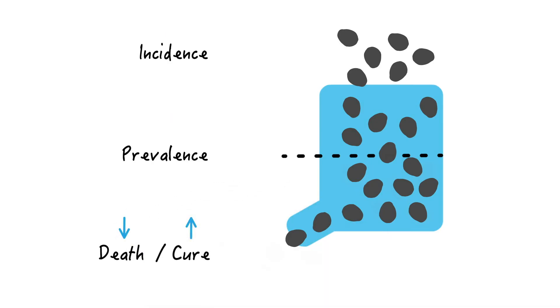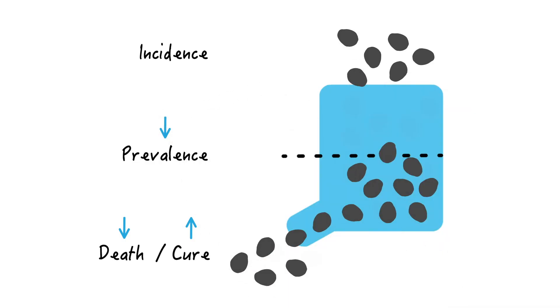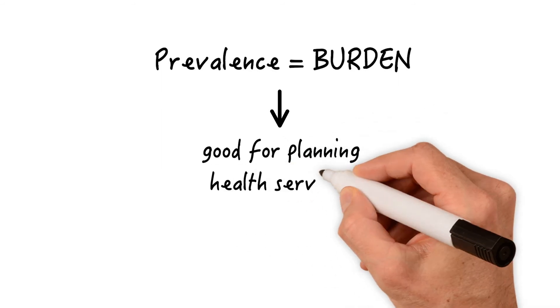What if death goes down and cure rate goes up? Well, as you probably guessed correctly, prevalence will decrease since more pebbles will leave the vessel. So prevalence is a measure of disease burden. As such, it is a great tool for planning the allocation of health services.